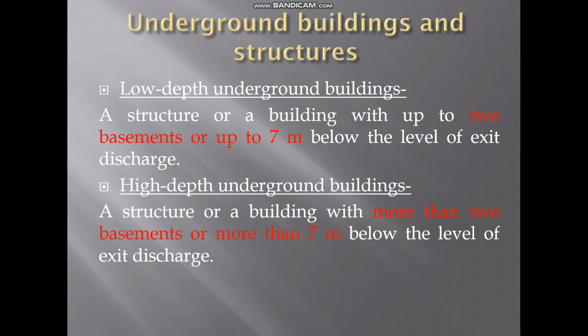This is the first point to consider. The second important point is to decide the occupancy type for the building as per IBC International Building Code chapter 3. There are a total of 10 occupancies we are going to see in this video.